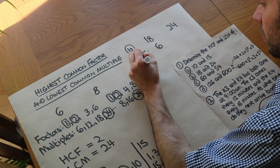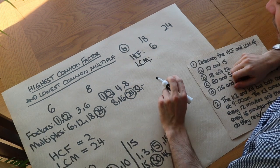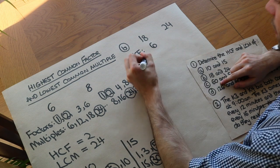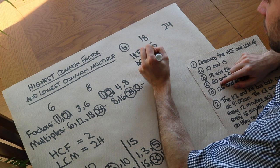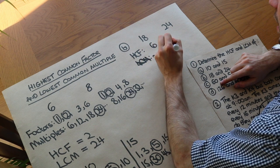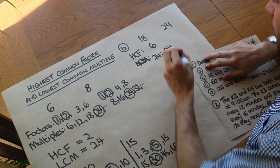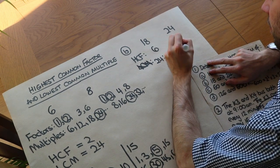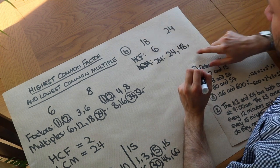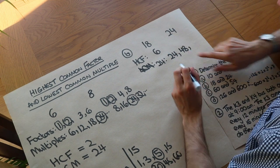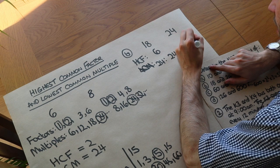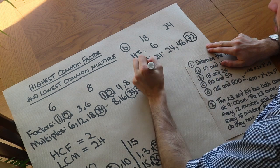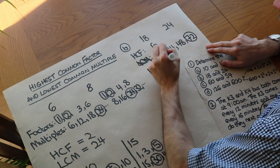What about the lowest common multiple? Let's list the multiples of the larger number first. The multiples of 24: well, 24 itself — is that a multiple of 18? No. The next multiple of 24, add another 24, we get 48 — is that a multiple of 18? No. Add another 24, we get 72 — is that a multiple of 18? Yes it is. So the lowest common multiple is 72.